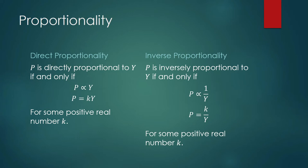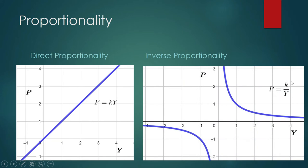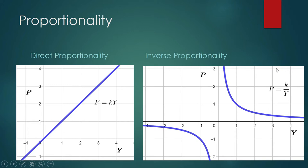Let us pay attention to the graphs. This is the graph when P equals K times Y, and this one is the graph for P equals K over Y. For social phenomena modeled after inverse proportionality, we don't need to pay attention to the part of the graph where Y is negative or P is negative. For much of the social phenomena that can be modeled by inverse proportionality, this is the graph that matters.